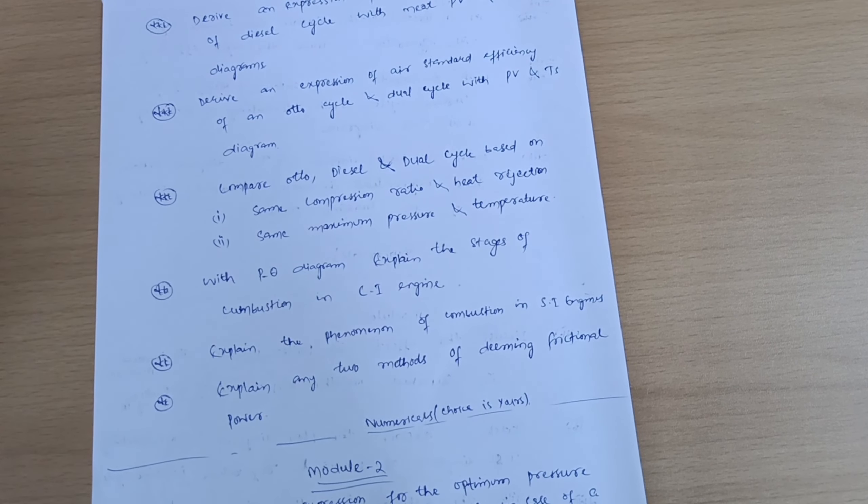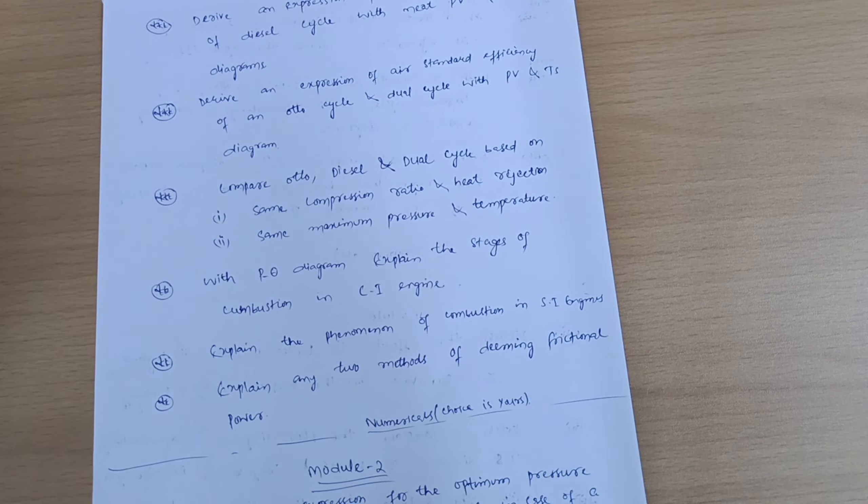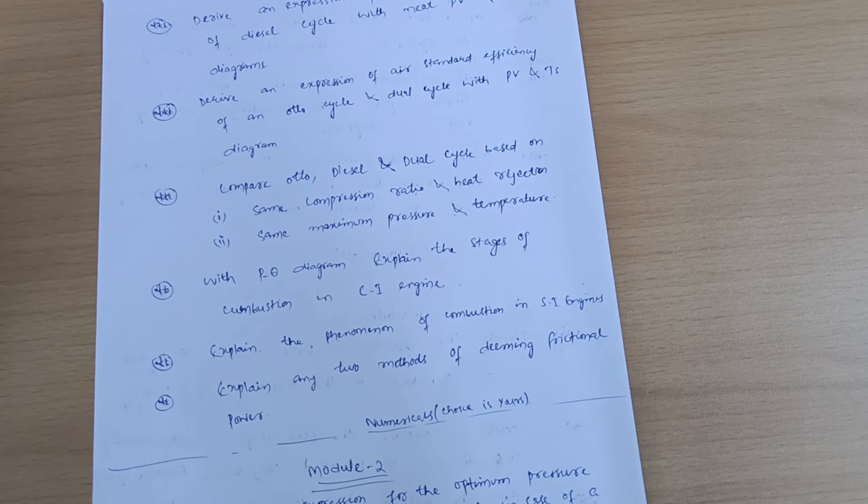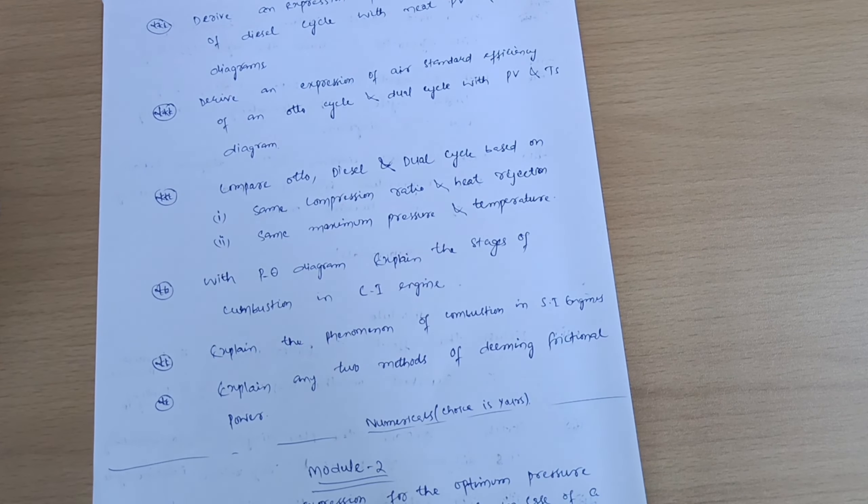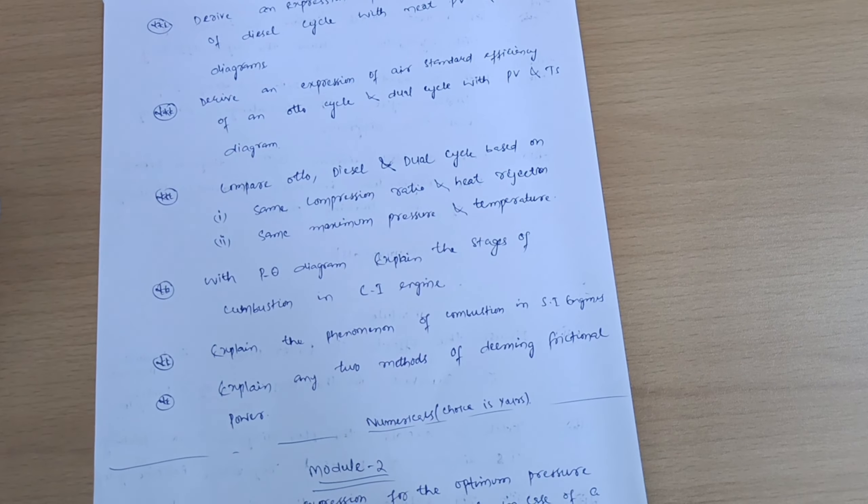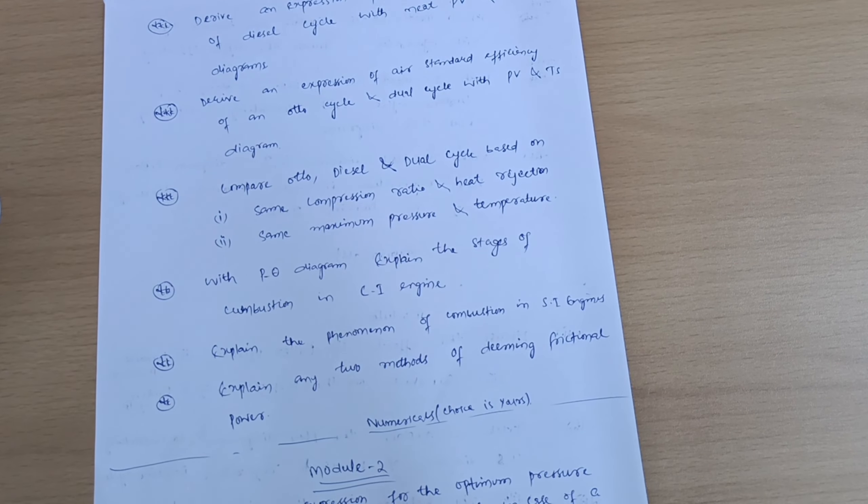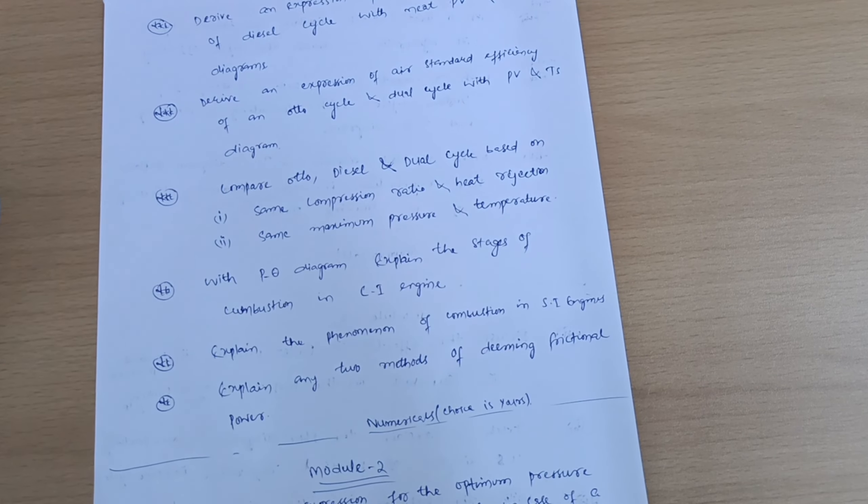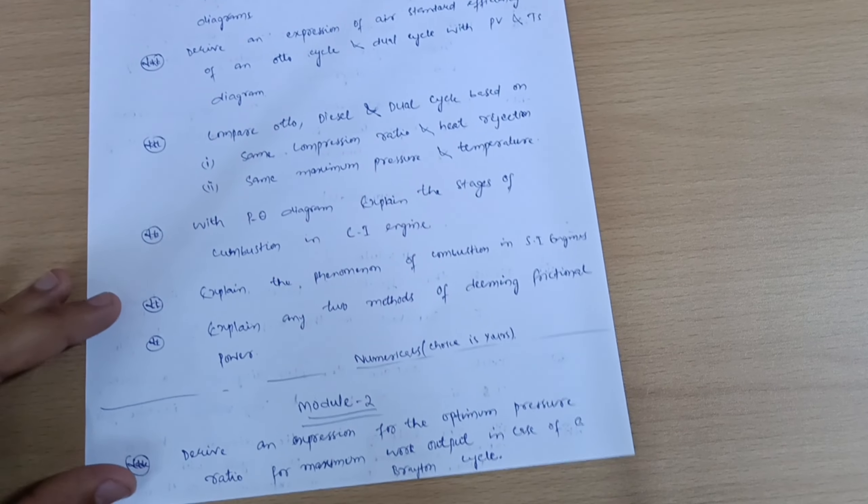These are the six questions which you have to cover from the first module. If you are convenient with the numerical part, if you have studied well in your college, surely go for the numericals also if you want to score. If you want to pass only, there is the possibility of passing this subject by theoretical portion. But sometimes, as you already know, VTU is setting unexpected papers. Sometimes for these type of subjects, you might have seen last time in basic thermodynamics, they asked a lot of numericals in that particular subject.